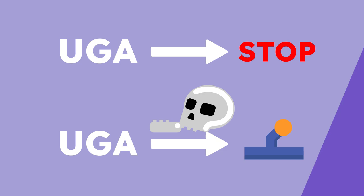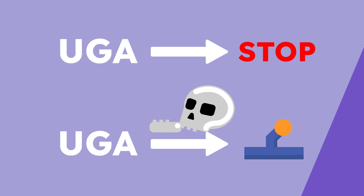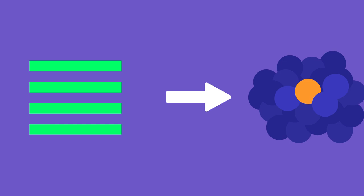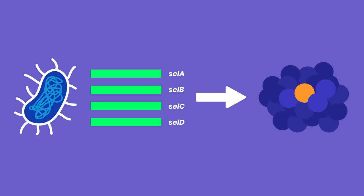But the story gets weirder. In 1988, a group of researchers were investigating four genes that were needed to make selenoproteins, called selA to D. They were using bacteria, but soon a similar discovery would be found in humans.